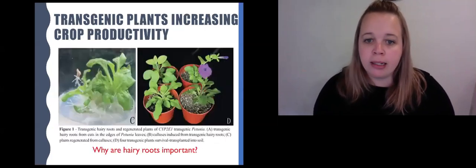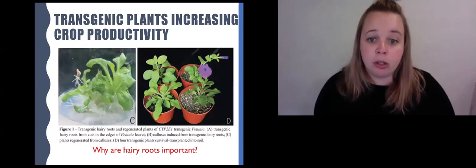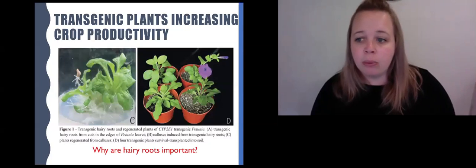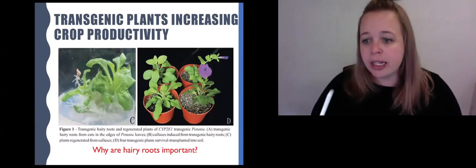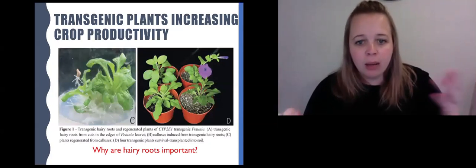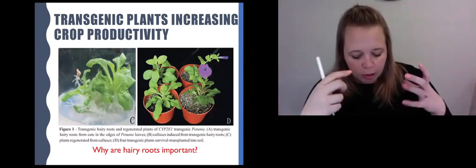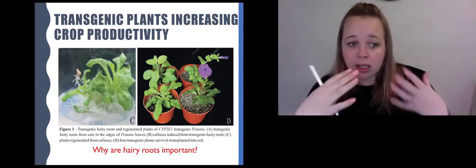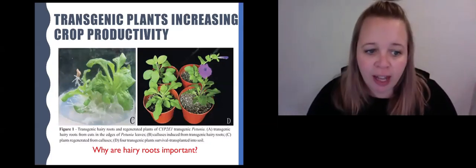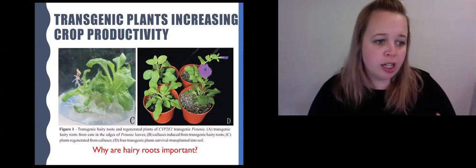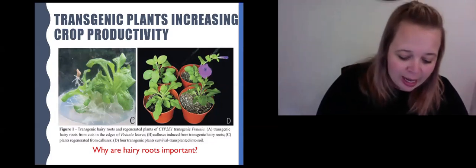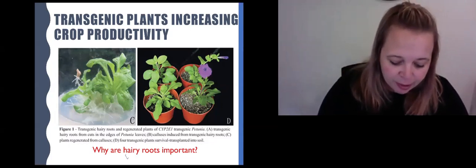The first one we're going to talk about are examples where we increase crop productivity or sometimes you say crop yield. So what examples of transgenic plants can you think of that would increase crop productivity? You might want to pause at some stage and write down some notes. So this is a petunia, a flower. The transgenic characteristic they have put into it is that it has hairy roots.